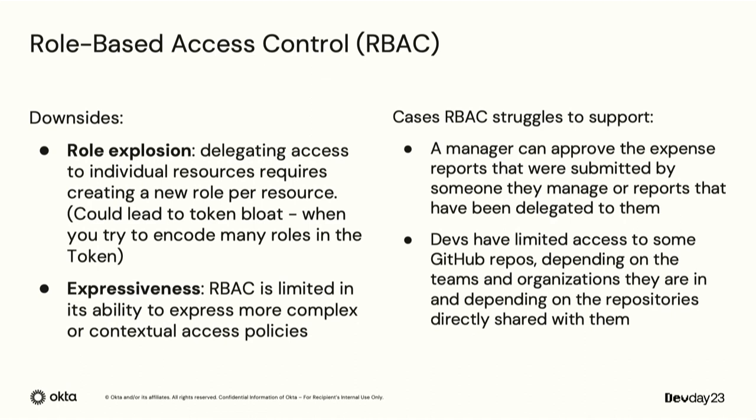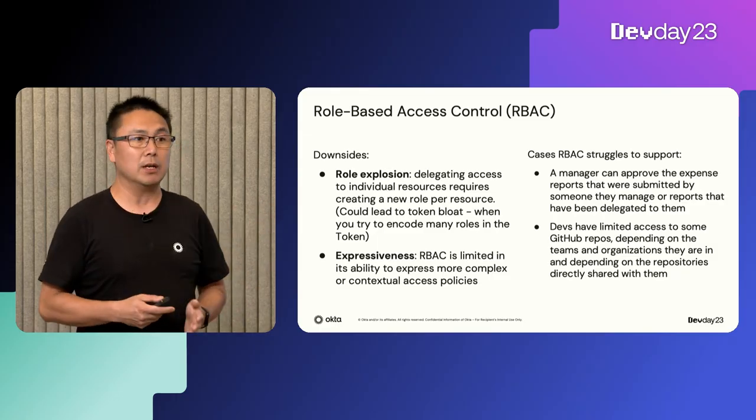The second problem with RBAC is its limited ability to express more complex or contextual use cases. For example, expressing a case where a manager can approve an expense report submitted by someone they manage, or by someone delegated to them, is difficult with RBAC. Similarly, if you want developers to have limited access to some GitHub repos depending on the team or organization they're in, or whether repos have been shared with them, RBAC will have difficulty implementing this.